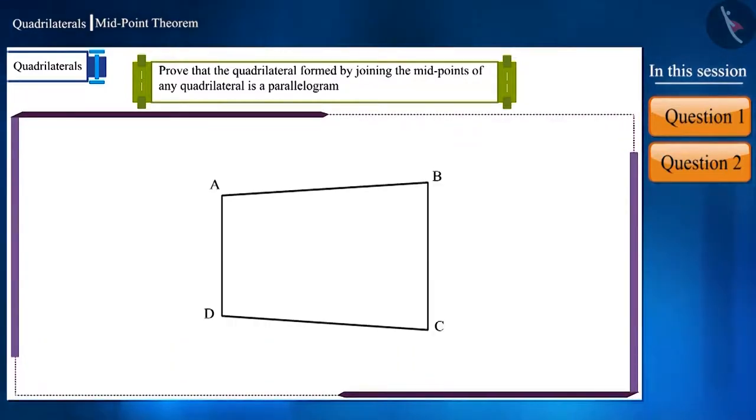ABCD is a quadrilateral. Points P, Q, R and S are the midpoints of sides AB, BC, CD and DA respectively. We are given this and we have to prove that the quadrilateral PQRS formed by joining these points is a parallelogram.